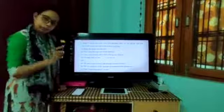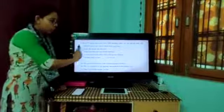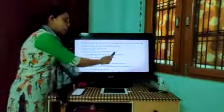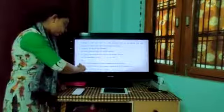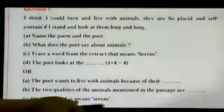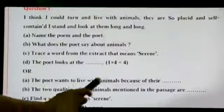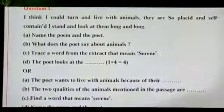So, what you can do? Like name the poem and the poet is given. Already given over here. So, you will write it once. Then what does the poet say about animals is given over here? You will write this and you can write or the two qualities of the animals mentioned in the poem are.